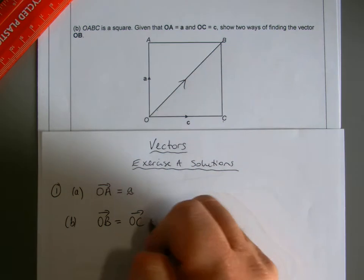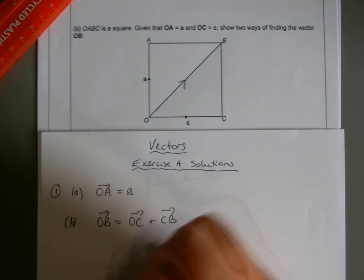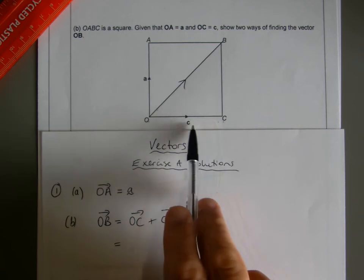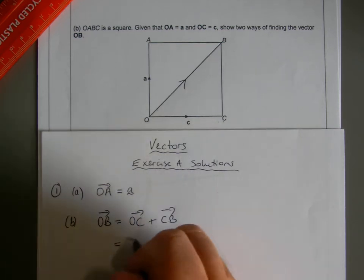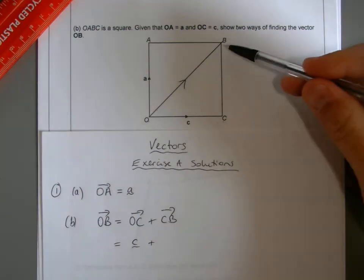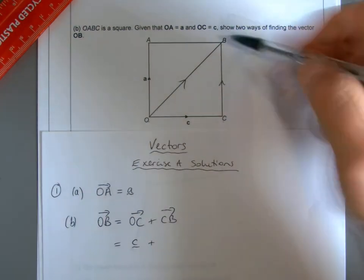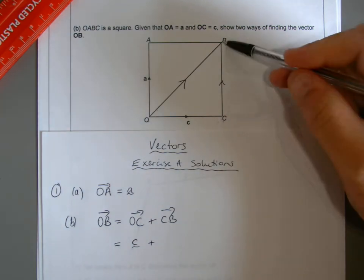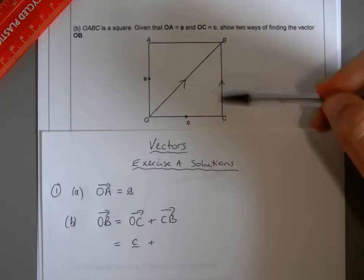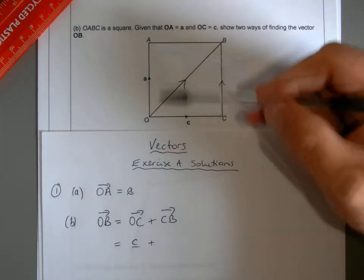I'm told O to C is little c, so I'll write little c there. Now C to B, I'm not told what it is. However, you should recognize C to B is parallel to O to A and it's the same length, because it's a square. Opposite sides are equal, and so that will be little a as well.